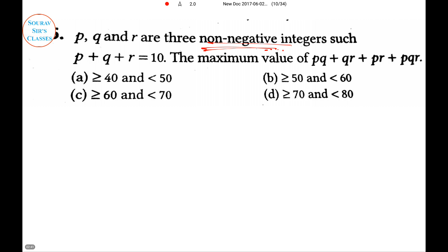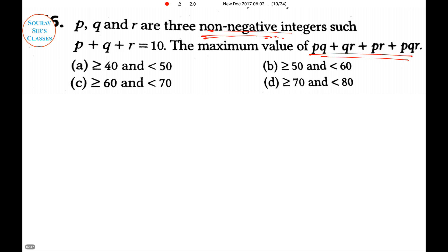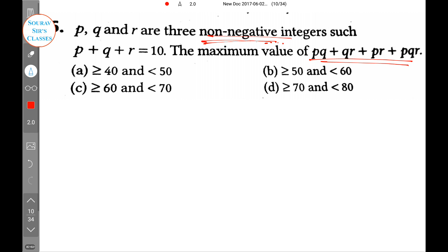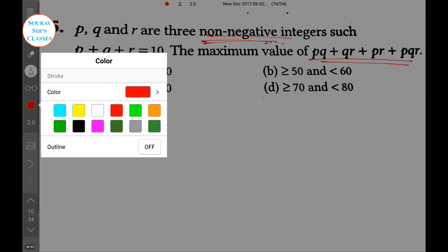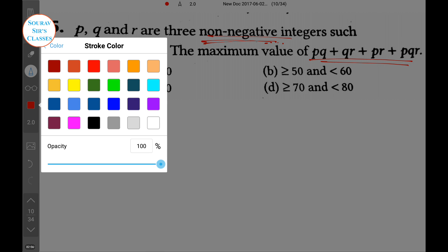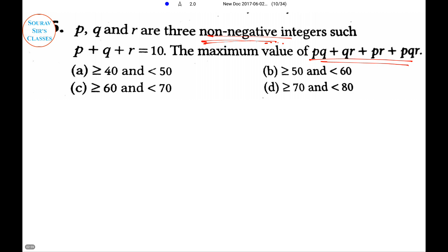P, Q, R are three non-negative integers such that P + Q + R = 10. We need to find the maximum value of PQ + QR + PR + PQR. We can't apply the ab + bc + ca formula directly. The value of PQ + QR + PR + PQR will be maximum if we consider the greatest possible values of P, Q, R, since all terms are positive.